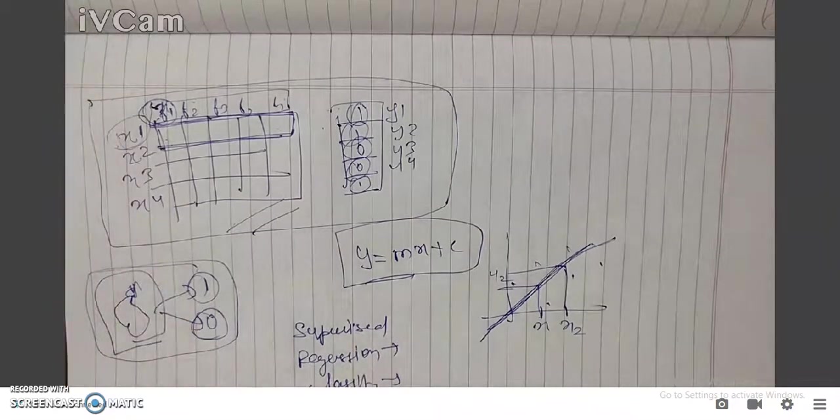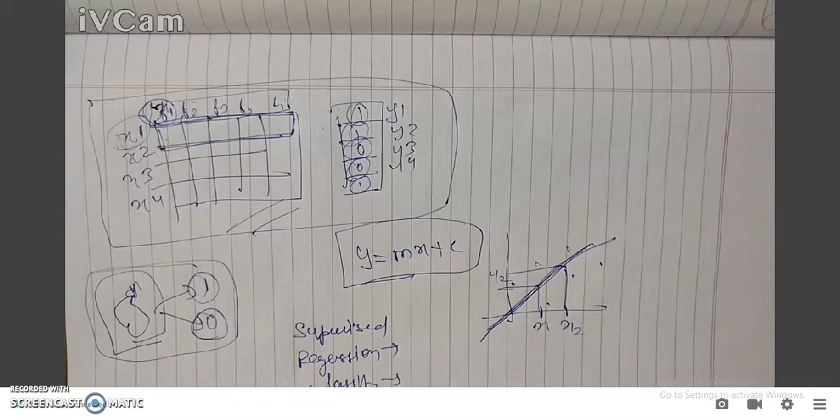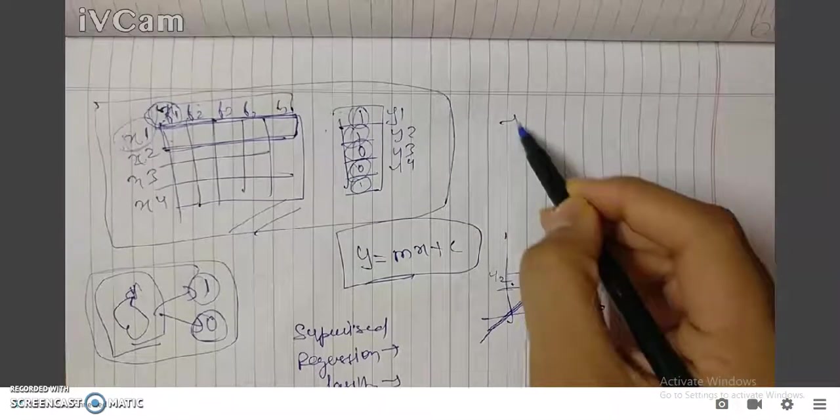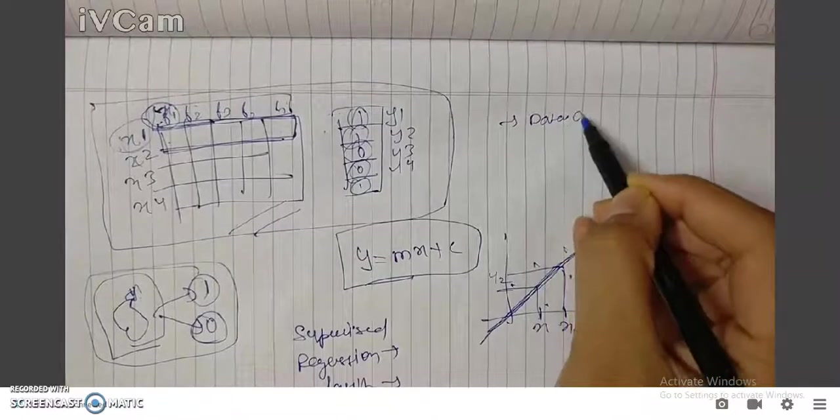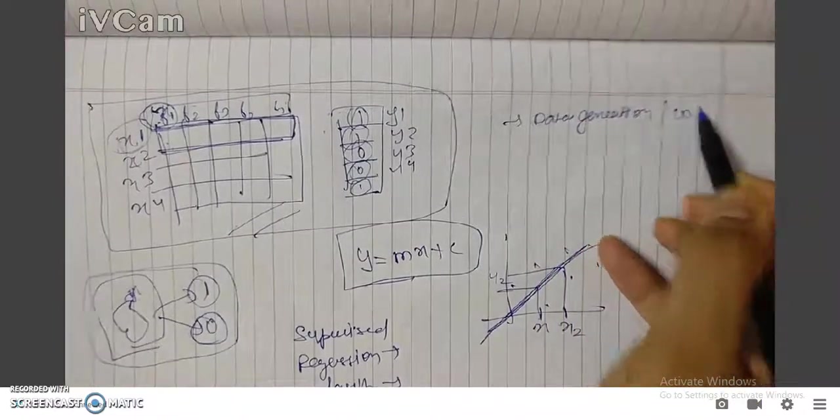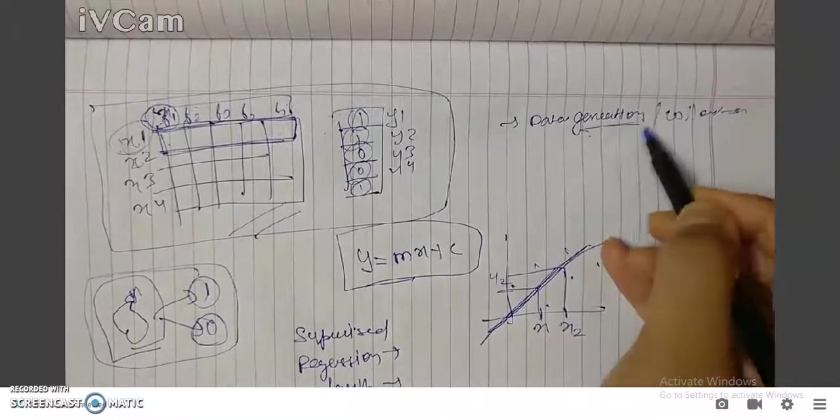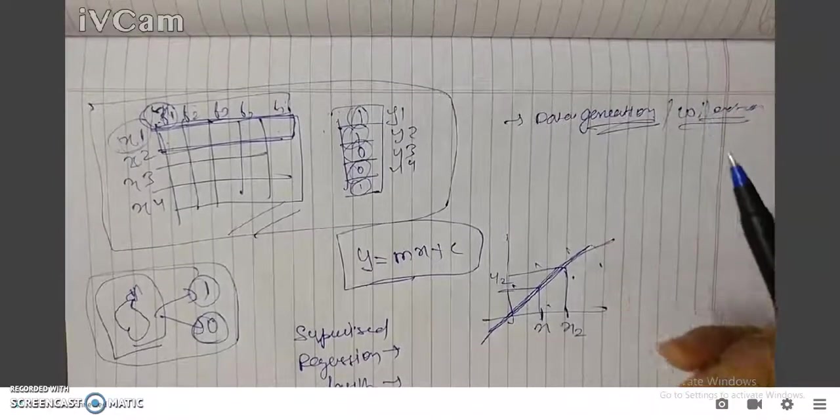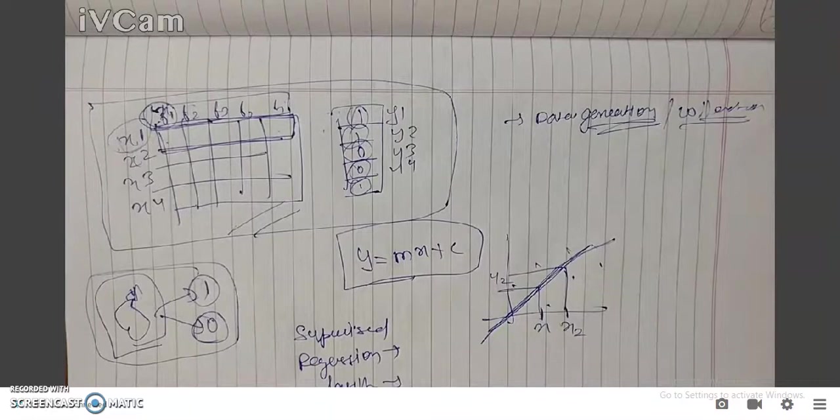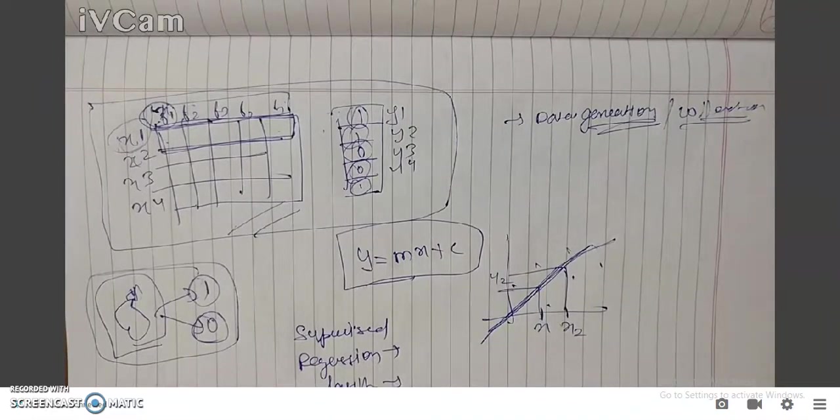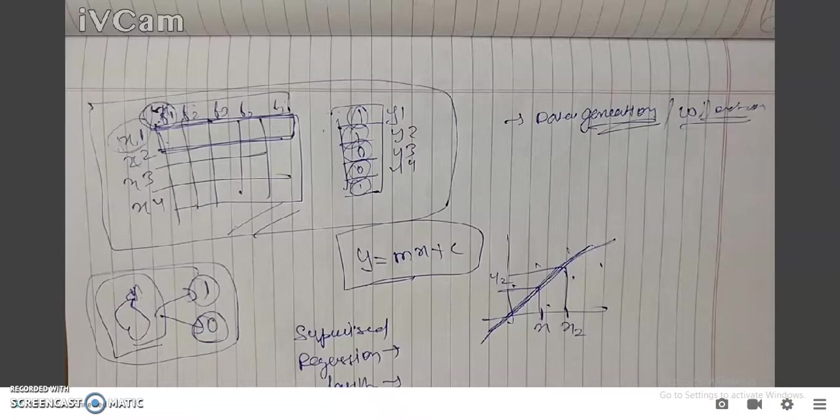In the machine learning pipeline, there are four types of steps we need to follow. First one is data generation or data collection. In data generation or collection, this is the very first step - we need to collect the data, whether it can be through scraping some website or getting some data from other datasets available over the net. It depends on your use case.